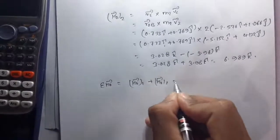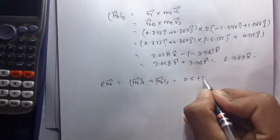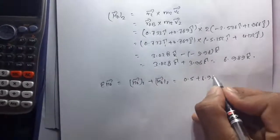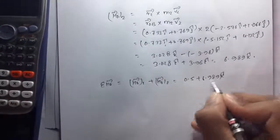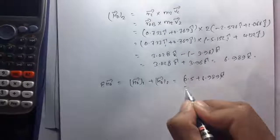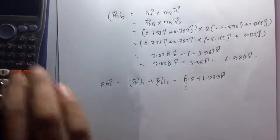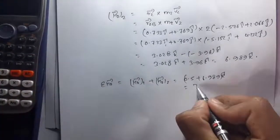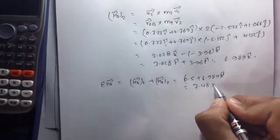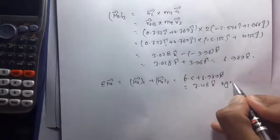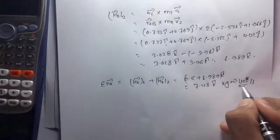The total angular momentum about point O is H₀ = H₀₁ + H₀₂ = 0.5 k + 6.989 k = 7.489 k ≈ 7.48 k kg·m²/s.